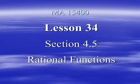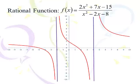Here we go with lesson 34. This is the first of three lessons that's going to cover section 4.5, Rational Functions. What's a rational function? Well, here's one: 2x squared plus 7x minus 15 over x squared minus 2x minus 8. That's a rational function.